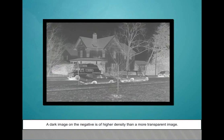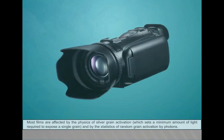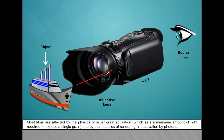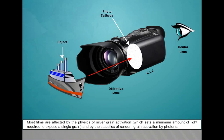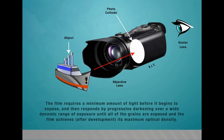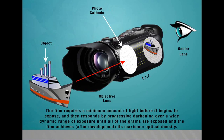Most films are affected by the physics of silver grain activation which sets a minimum amount of light required to expose a single grain, and by the statistics of random grain activation by photons. The film requires a minimum amount of light before it begins to expose, and then responds by progressive darkening over a wide dynamic range of exposure until all of the grains are exposed and the film achieves, after development, its maximum optical density.